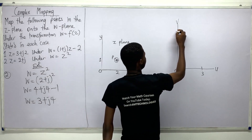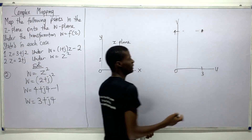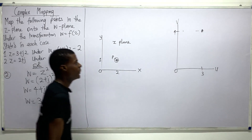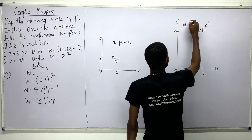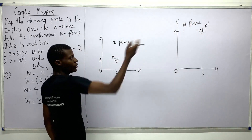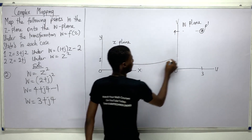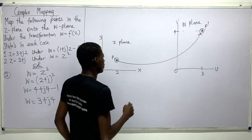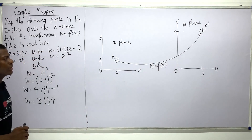Now for the w-plane with u and v axes: u = 3 goes further along the horizontal, and v = 4 goes up the vertical. Tracing these two gives me the mapped point, which I call P prime. I don't have a ruler to confirm exact positions, but this is the w-plane. I draw an arrow showing the mapping, with the label w = f(z).